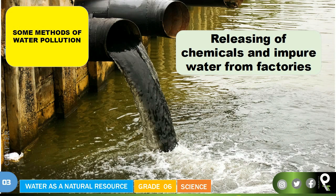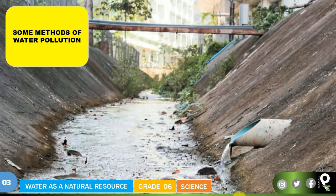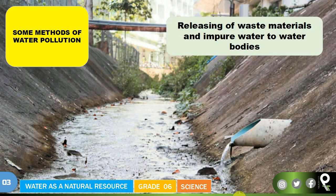Another very dangerous method is the releasing of chemicals and impure water from factories. Factories use chemicals and divert their waste impure water into water bodies. That particular tube is taking dirty, oily water from a factory into a stream. Because of that, the living beings in the habitat — like fish — are disturbed, and the people consuming that water are also affected.